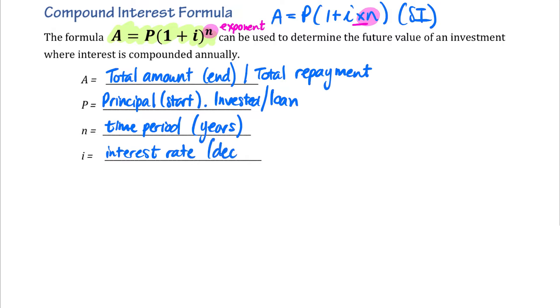Which remember, must either be as a decimal, or as a fraction over 100. So remember, your I value is the rate divided by 100.